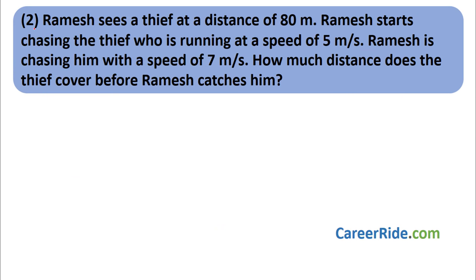Question 2: Ramesh sees a thief at a distance of 80 meters. The thief runs at 5 meters per second and Ramesh chases him at 7 meters per second. How much distance does the thief cover before Ramesh catches him? Again, write DST. Is speed the same? No, both have different speeds. Is distance the same? No, Ramesh covers more distance. So let us check if time is the same.